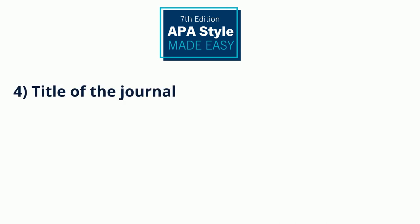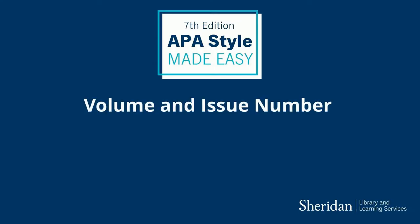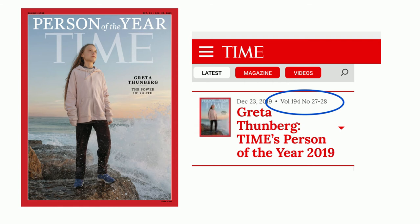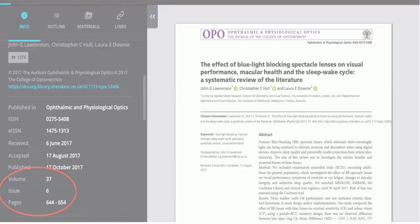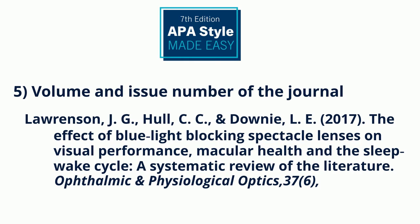Then write out the title of the journal that the article was published in, and format the journal title in italic letters. After the journal title, you will need to include the volume and issue number. Volume and issue are ways of organizing journal releases — journals publish several times per year, and the volume and issue number refer to the specific release that had the article inside of it. Each volume is made up of a number of individual issues, similar to print magazines or comic books. Put a comma after the journal title and, still using italic letters, write the volume number. In round brackets, write the issue number. Do not put a space between the volume number and the round brackets.